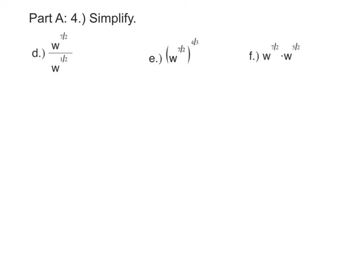Rational exponents follow the same rules as every other exponent. So if I'm going to divide two exponents, all I have to do is subtract their powers. When we have w to the seven halves divided by w to the one half, all we have to do is take seven halves and subtract one half. Seven halves minus one half is six halves, and that simplifies to w to the third.